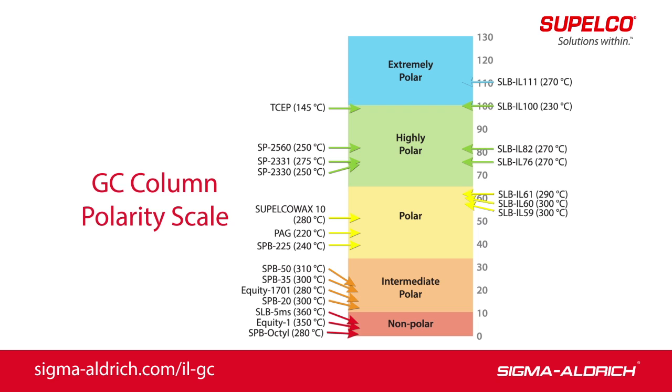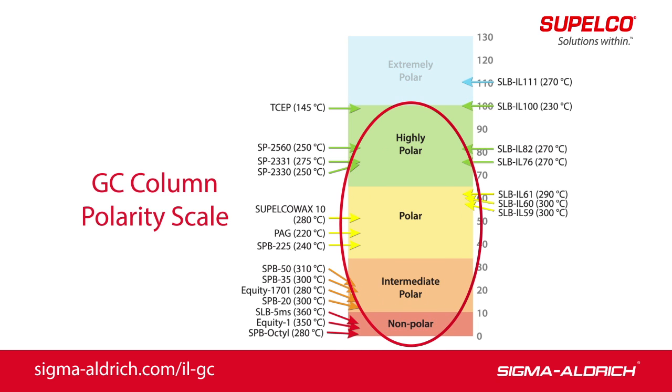The scale is divided into five regions. The first four regions are generally accepted and used by several GC column manufacturers.